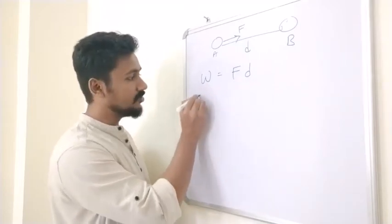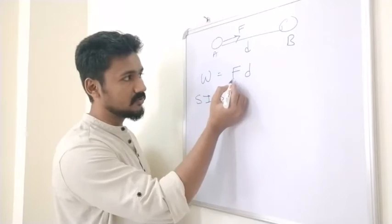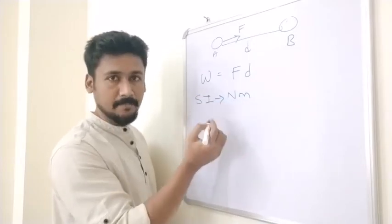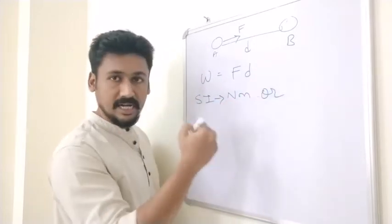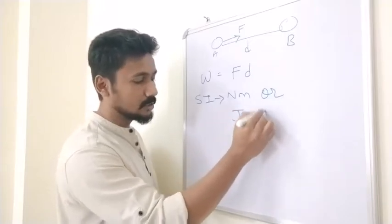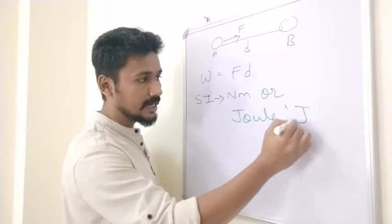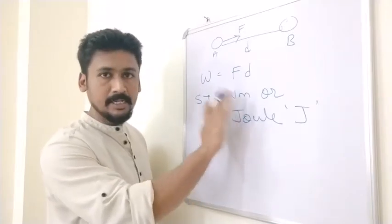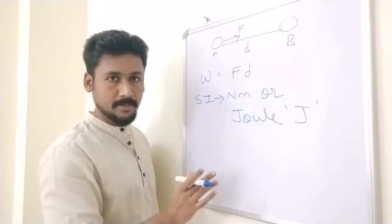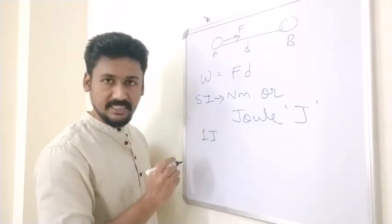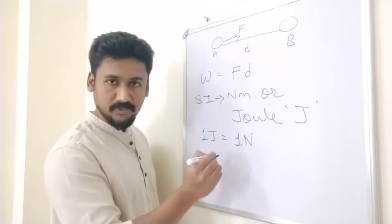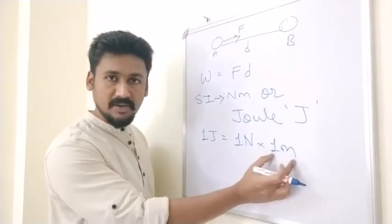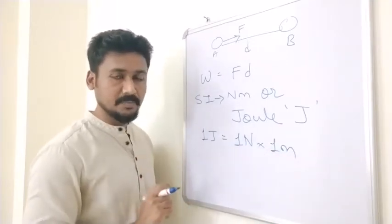What will be the SI unit? The SI unit of force is Newton and the SI unit of displacement is meter. So the SI unit of work is Newton meter. But instead of this, we use another unit called joule — J-O-U-L-E — and its symbol is J. So the SI unit of work is joules. When we say one joule of work is done, that means one Newton of force is applied to bring about a displacement of one meter.